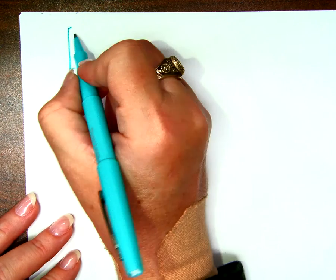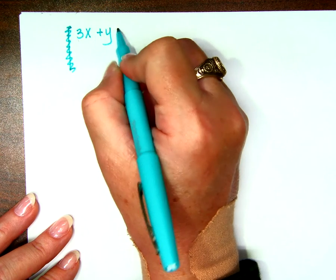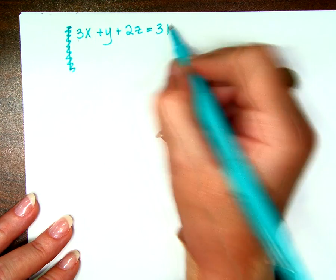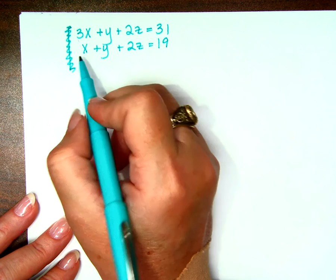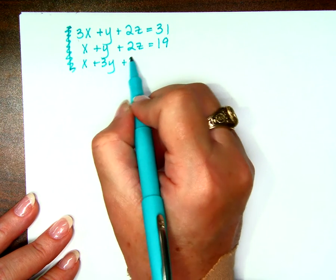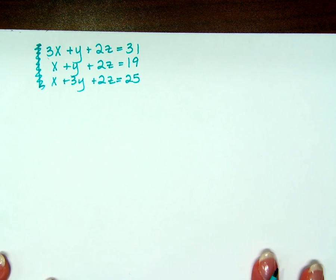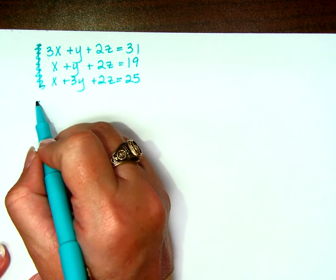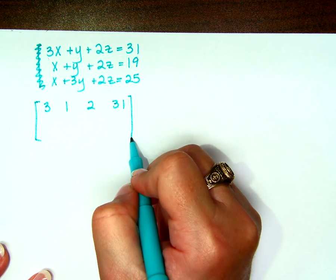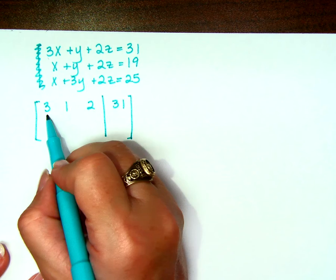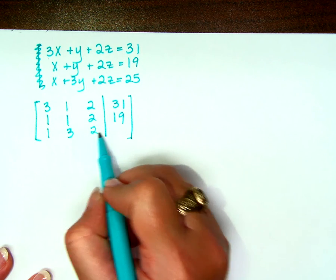Here's where we start. 3x plus y plus 2z equals 31. x plus y plus 2z equals 19, and x plus 3y plus 2z equals 25. So, first of all, can you write me an augmented matrix from this? 3, 1, 2, 31. What's next?